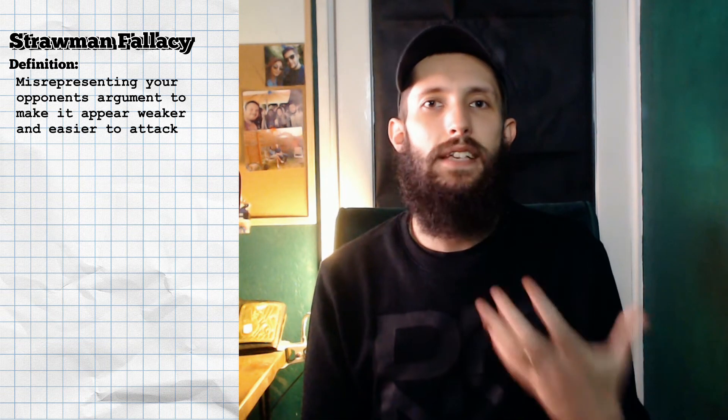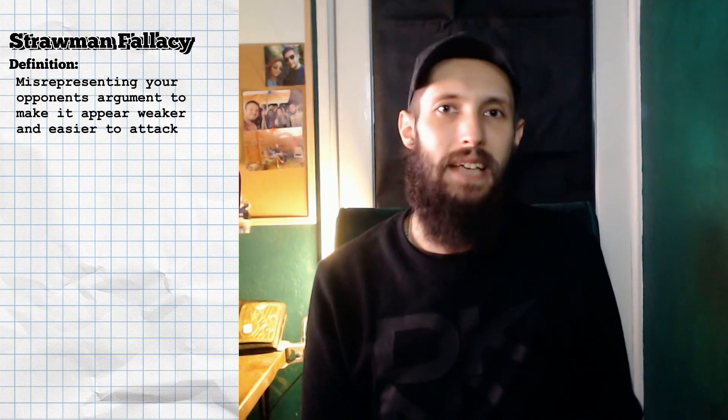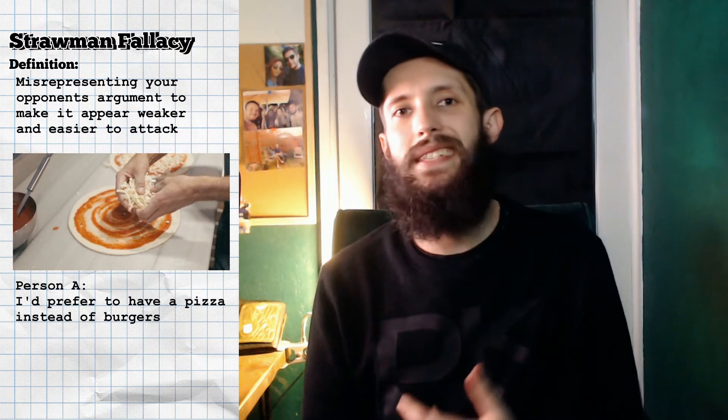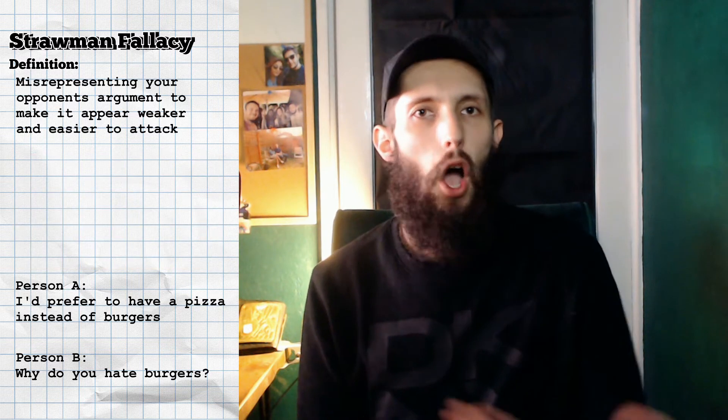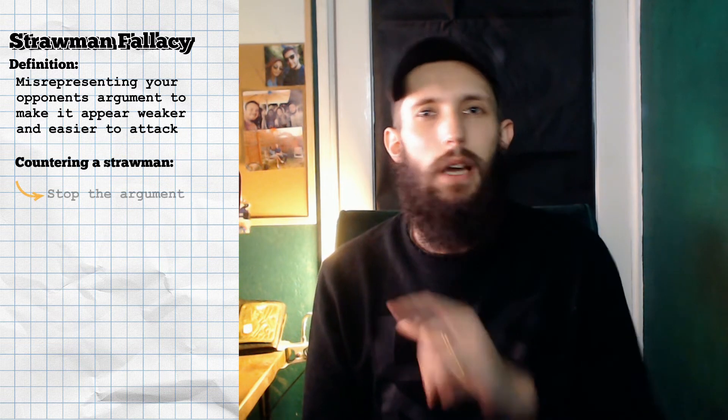To look at this structurally, we'll use an example of two people discussing what takeout they want to buy. So person A turns to person B and says: 'I prefer to have a pizza instead of burgers.' Person B responds: 'Why do you hate burgers?' Notice that person A never said that they hated burgers — just that they would prefer the pizza over the burger. At this point person A may feel compelled to argue that they do not hate burgers, which is completely changing the discussion. If you recognise that someone is doing this to you, do not allow the argument to proceed unless that person can fairly represent what you're saying.